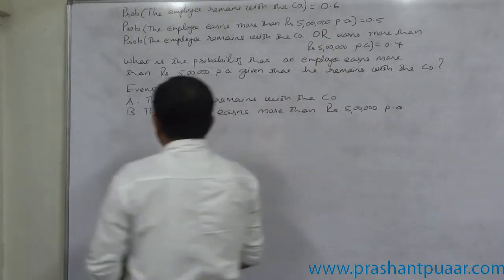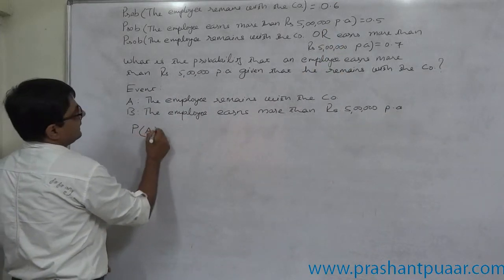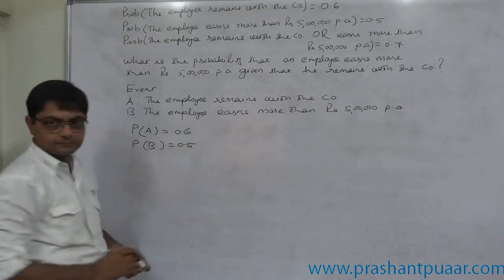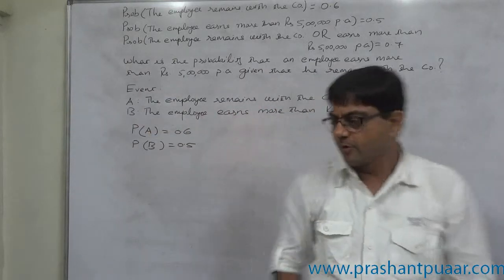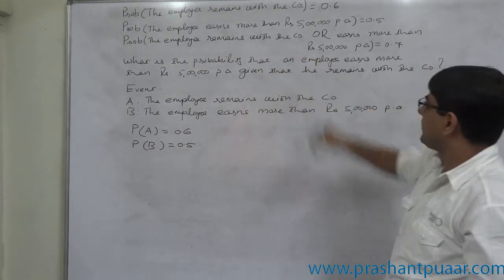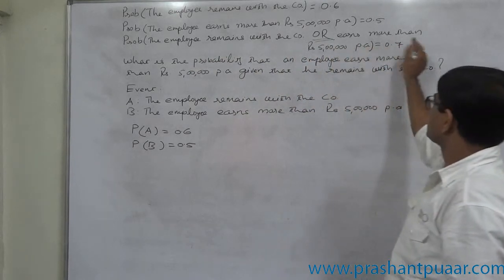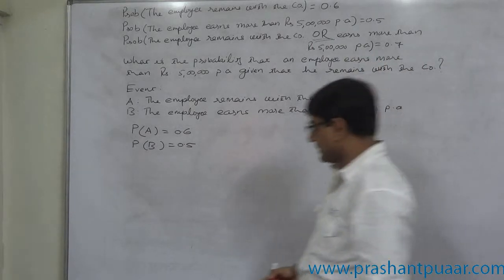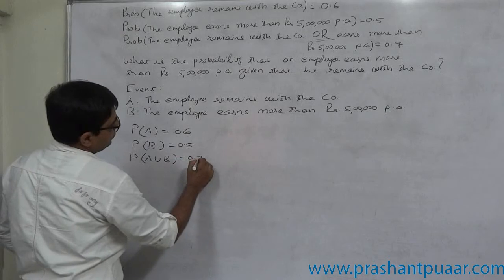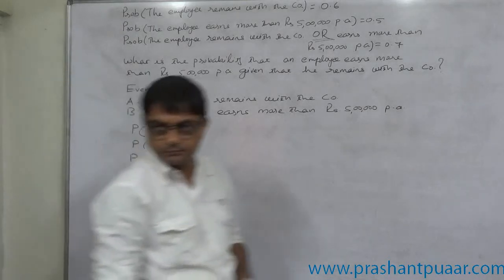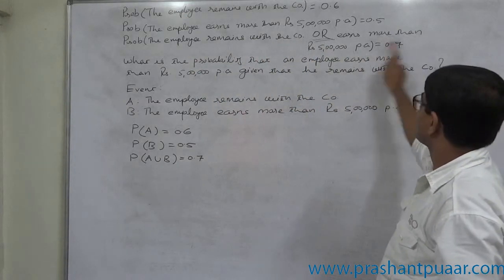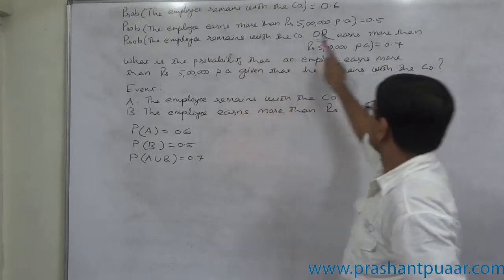According to the data available, P(A) is 0.6, P(B) is 0.5. The third piece of information is the probability that the employee remains with the company or earns more than Rs.5 lakh per annum is 0.7 — that means it is a case of union. P(A ∪ B) equals 0.7.